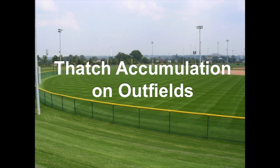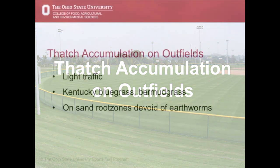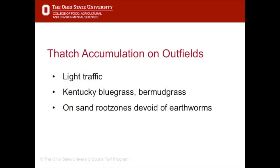On fields that get a lot of traffic and wear and the ground cover gets worn away, thatch accumulation is not really a problem, but baseball outfields can sometimes be prone to excessive thatch accumulation because they generally don't get a lot of traffic. Certain grasses like Kentucky bluegrass and bermudagrass are also prolific thatch producers, so if they are present on an outfield they need to be managed, and fields built on a sand root zone devoid of earthworms will also need to have thatch levels managed.